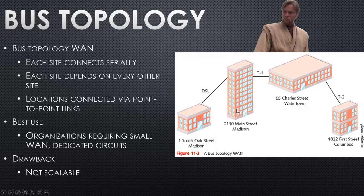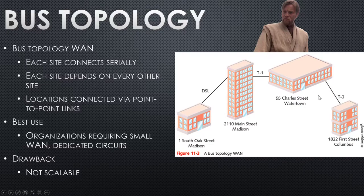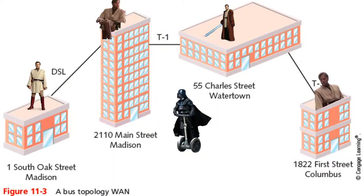Say you have your main company at 210 Main Street connecting to the Oak Street branch via DSL, and the Charles Street branch a block away gets a T1 line — much faster. Then Charles Street to 1st Street has a T3 available, even faster. Different technologies connect different buildings, but technically this is a bus topology because it's all in a line — serial.